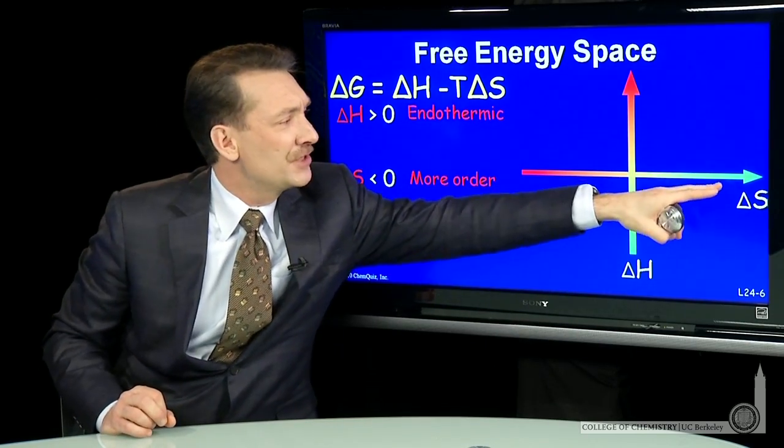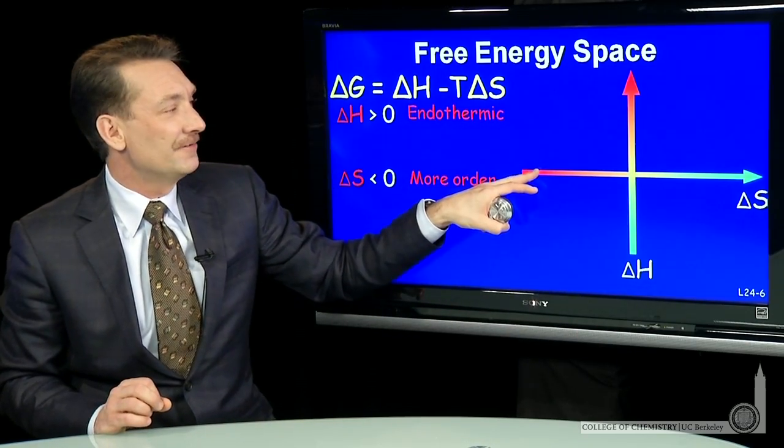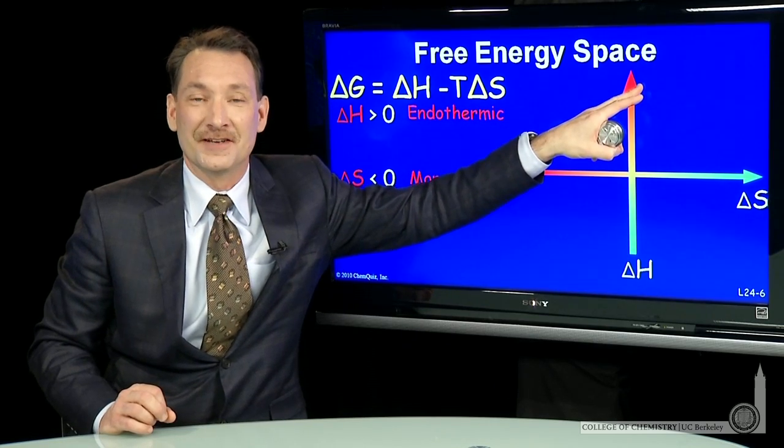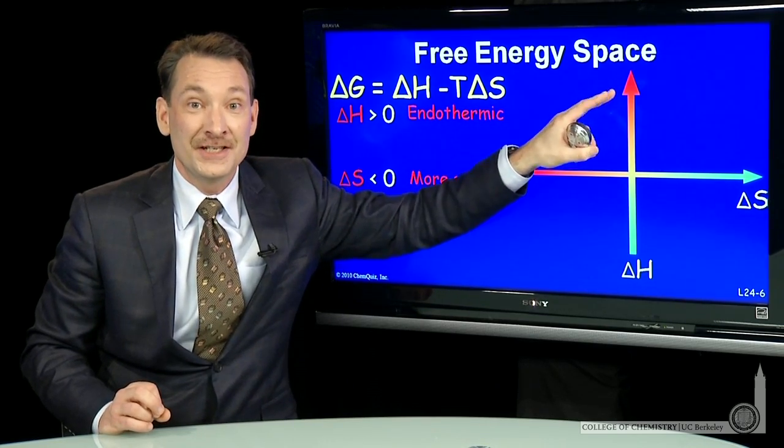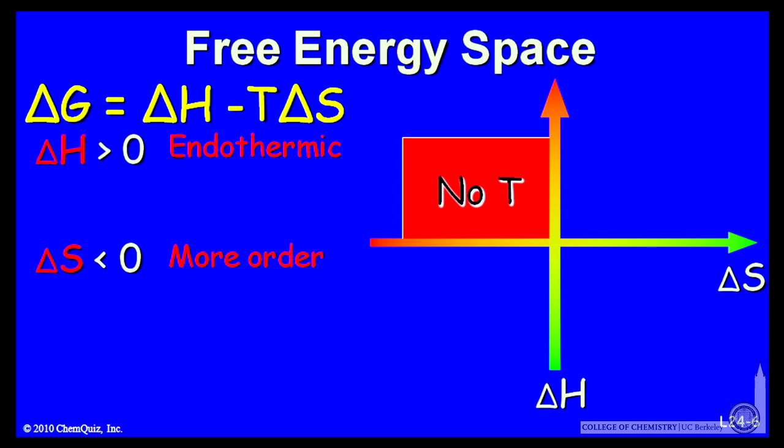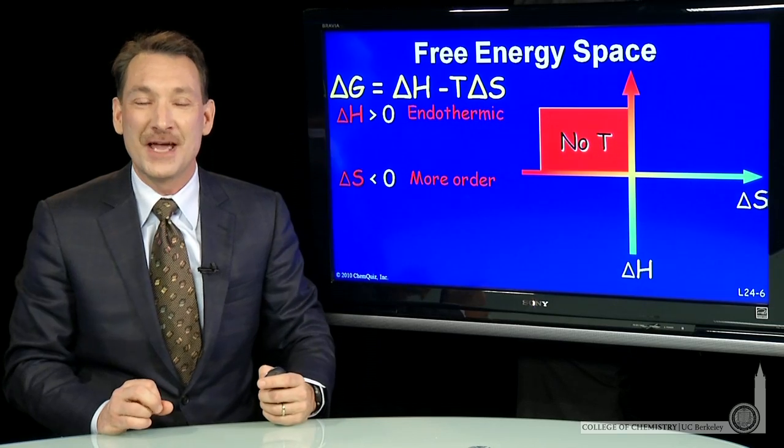What about the regions where delta S is negative and delta H is positive? For those conditions, there's no temperature that can make delta G negative. There's no conditions of temperature that can make a reaction that's endothermic and goes to a more constrained state spontaneous.